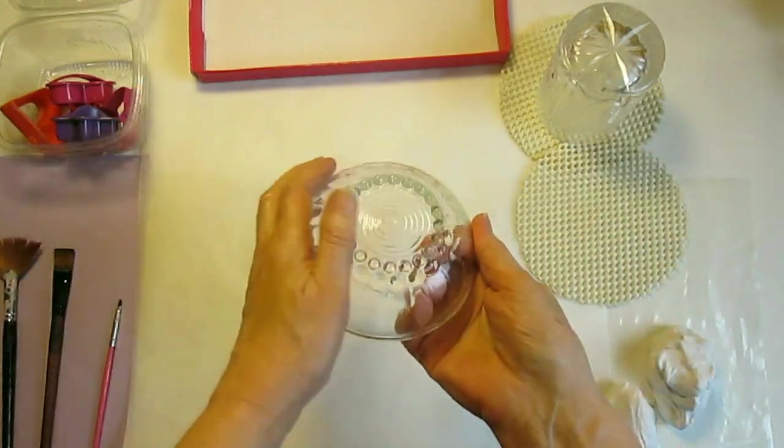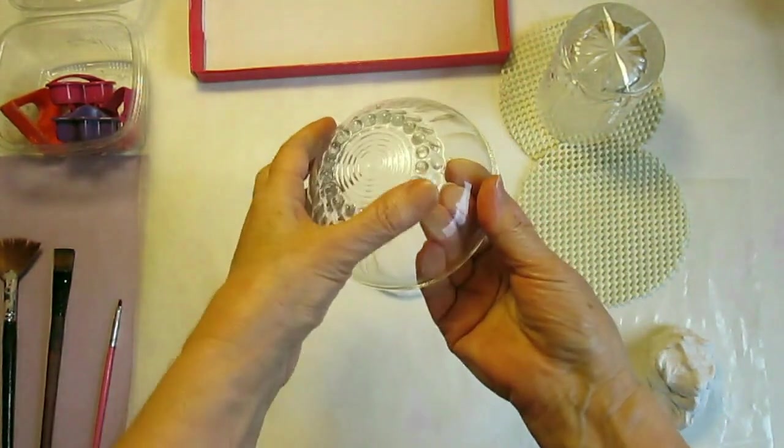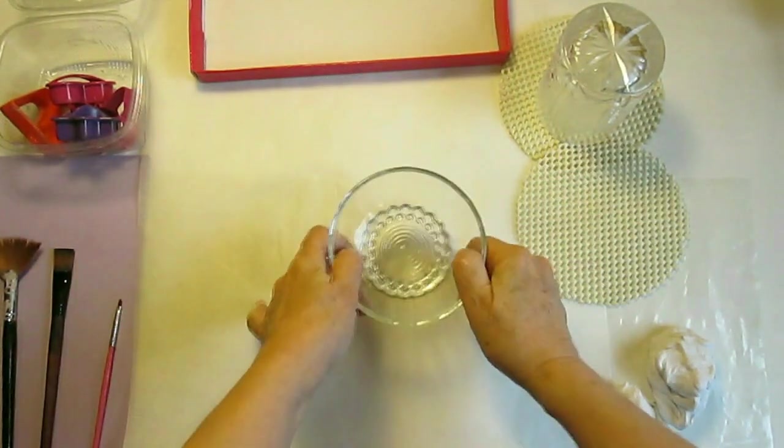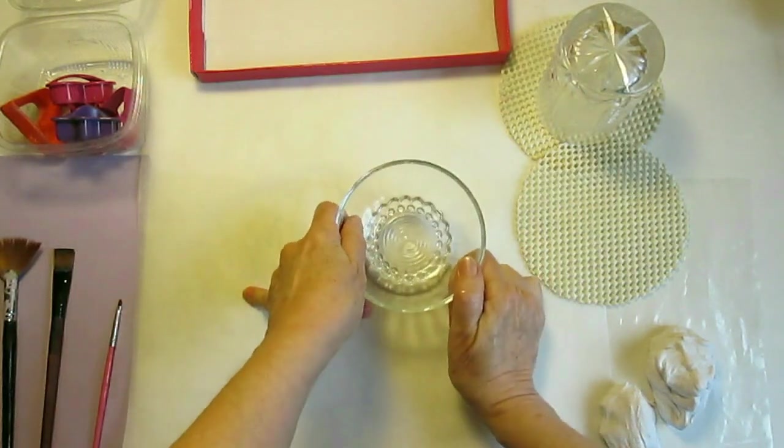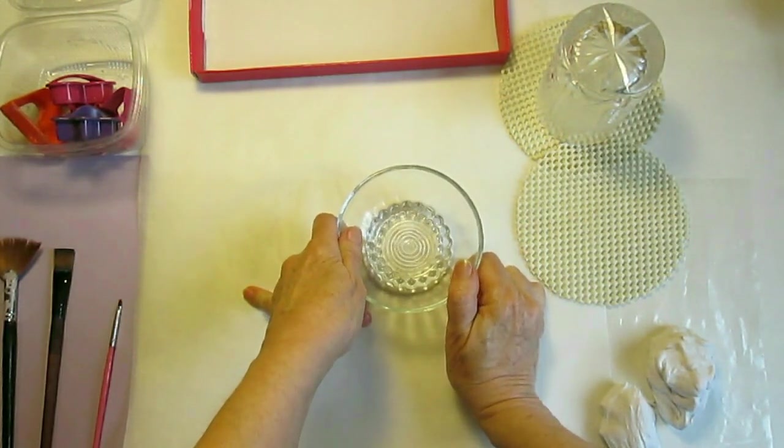And now I have here a little glass ball with a nice pattern so I will use this ball to make texture. I'm going to be as precise as possible.